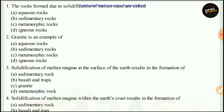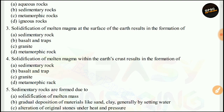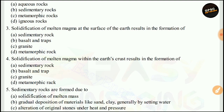The first question: rocks formed due to solidification of molten mass are called igneous rocks. The right answer is D. Next, granite is an example of — the right answer is D — it is an example of igneous rock. Solidification of molten magma at the surface of the earth's crust results in the formation of basalt and traps. The right answer is B.